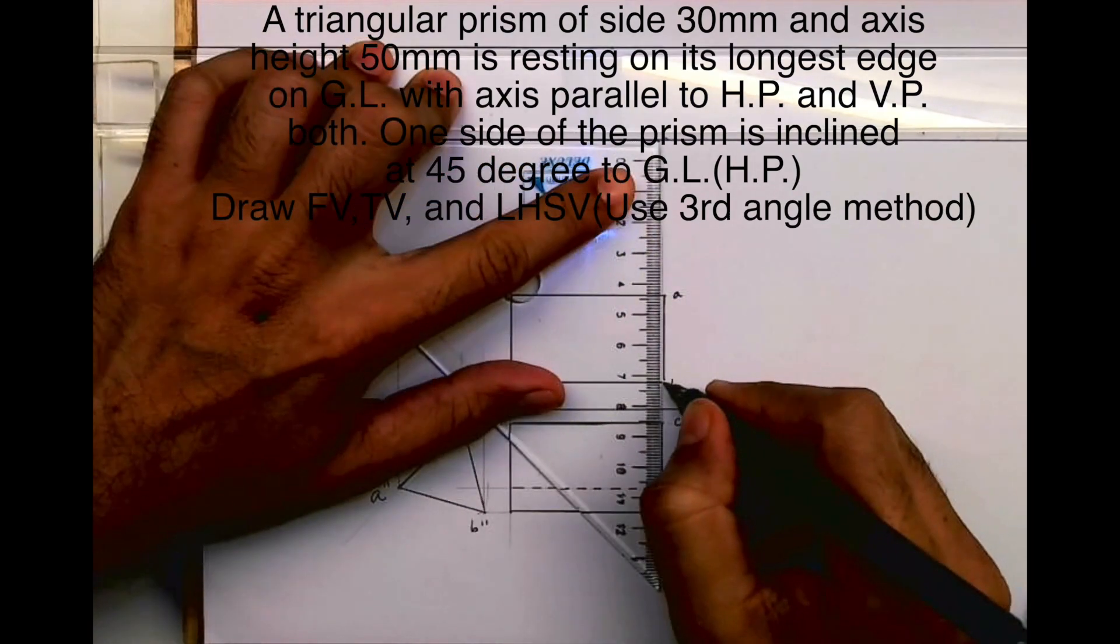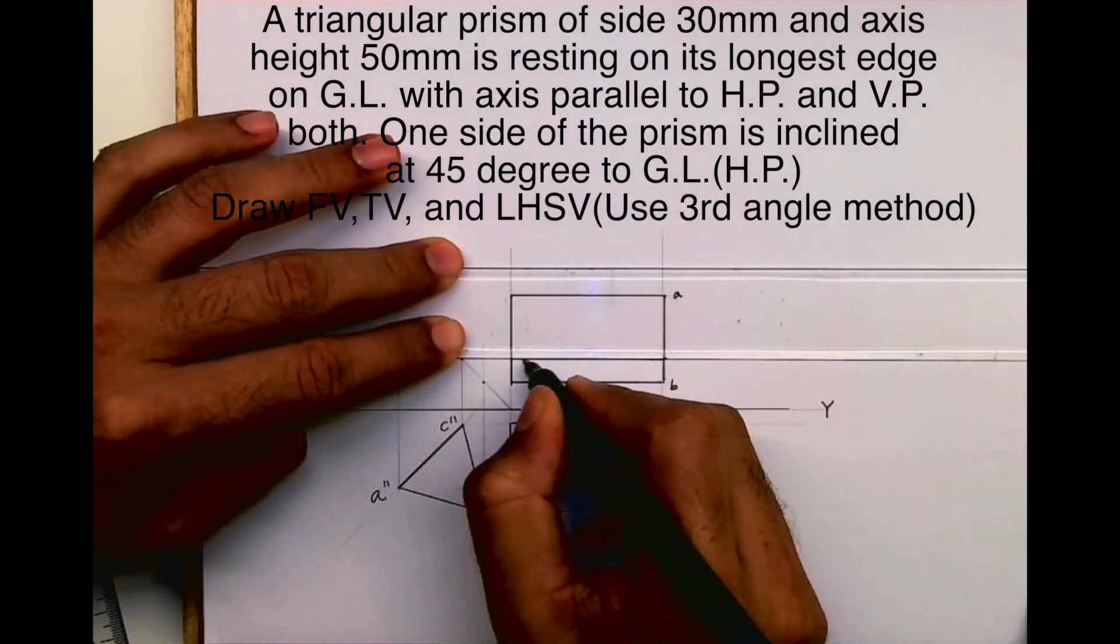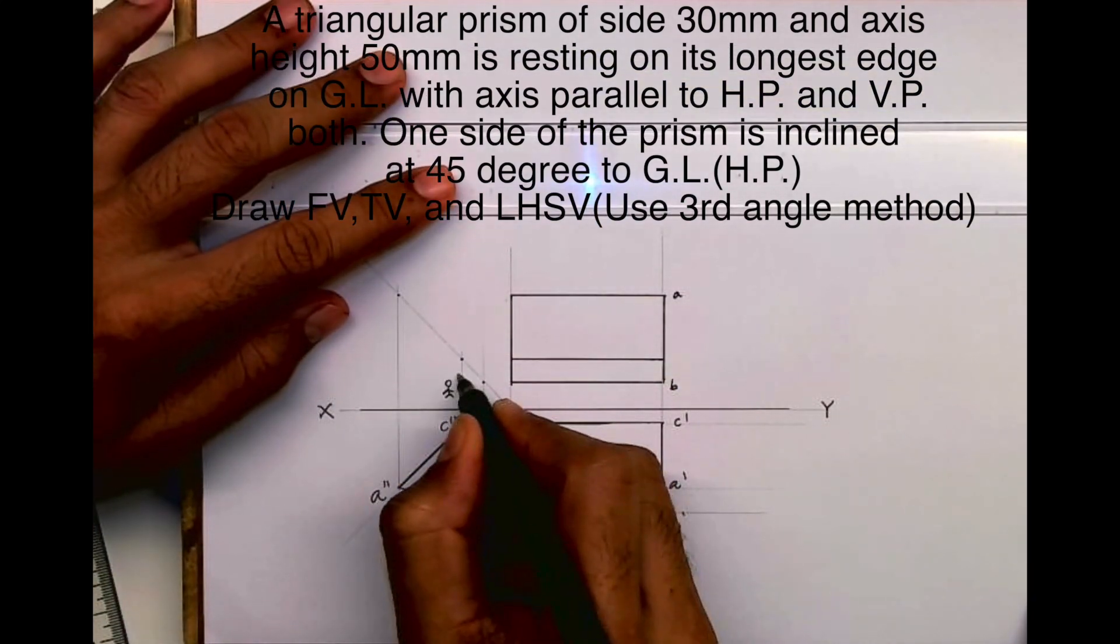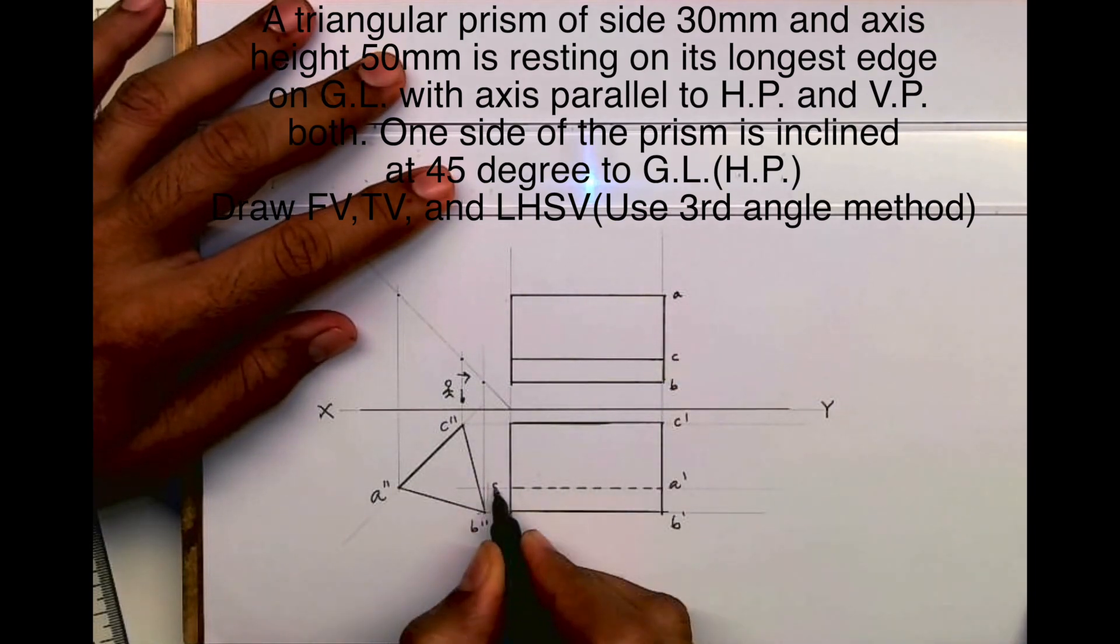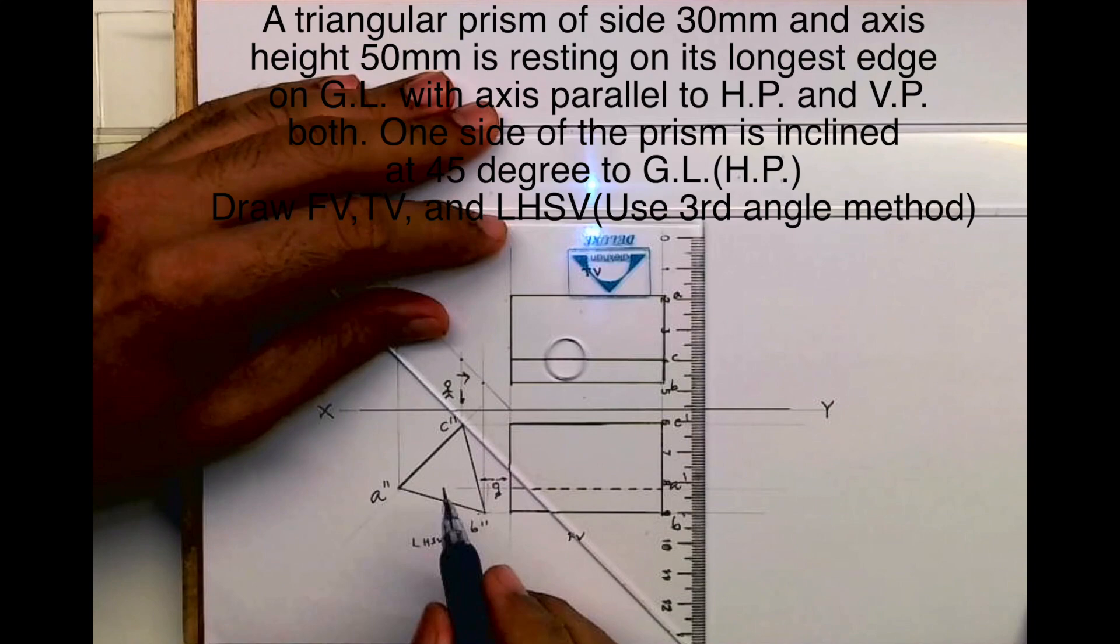In top view we write without dash. Now if you see from here, this will be down because the observer is here. You can see from here, you can draw it here. And here, A dash will be dotted because A double dash is away from the observer. So I hope you have understood this sum. Thank you.